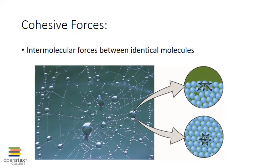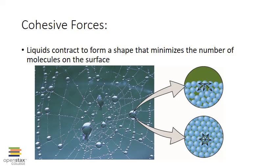The intermolecular forces that hold liquid molecules together are called cohesive forces. This drawing depicts cohesive forces in action in liquid water droplets. The molecules within the liquid are surrounded by other molecules and are influenced by intermolecular forces equally in all directions. At the surface of the liquid, however, molecules are only attracted by other molecules on the side and below them. These unbalanced attractions pull those surface molecules together, causing them to contract.